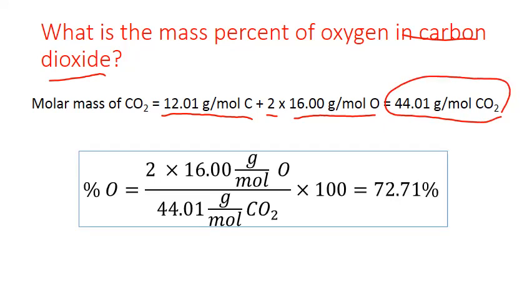I use this in the denominator of my percent composition formula. On the top, I'm only asked for the percent of oxygen, so I use two for my two oxygen in the formula times the periodic table mass, 16, and divide by the total mass times 100 to give me a final percent of oxygen of 72.71 percent.